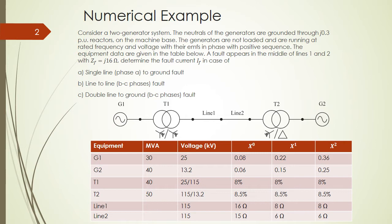The generators are not loaded and they are running at rated frequency and voltage, with their EMFs in phase with the positive sequence. So the voltage will be 1 PU everywhere in the common base, because the voltages are in phase and the system is not loaded.